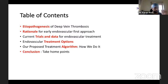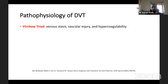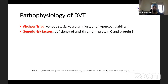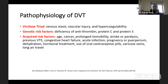When it comes to the pathophysiology of DVT, we all know about Virchow's triad: venous stasis, vascular injury, and hypercoagulability. Whenever you have a combination of these three factors, that results in DVT. Risk factors include genetic causes such as antithrombin, protein C, and protein S deficiency, or acquired factors like increasing age, oncological malignancy, post-operative period, prolonged immobility, stroke, congestive heart failure, previous DVT history, pregnancy, and oral contraceptive pills.